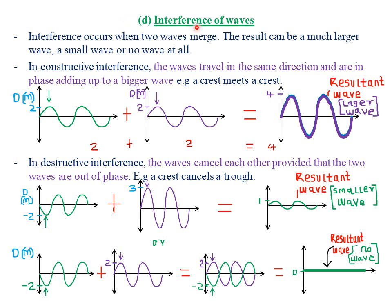Today we are looking at the fourth property of waves, which is called interference of waves. Remember, we looked at the first property — reflection — the second property — refraction — the third property — diffraction. And now we are looking at the fourth and final property, which is called interference of waves.